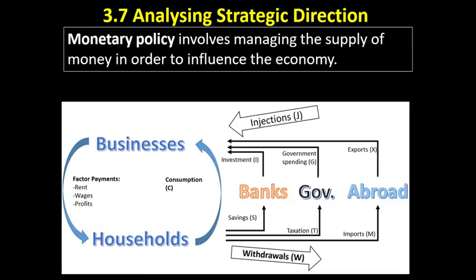Let's take a step back for a second. The government has four macroeconomic objectives: economic growth, full employment, price stability, and the balance of payments. The government also has three tools it can use to achieve these objectives: fiscal policy, monetary policy, and supply side policies.